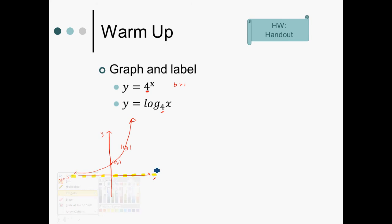To graph its inverse, where the base is also greater than one, I don't have the point zero one, I have the point one zero. I don't have the point one comma the base, I have the base four comma one. I don't have a horizontal asymptote at y equals zero, I have a vertical asymptote at x equals zero.